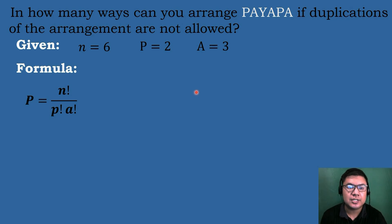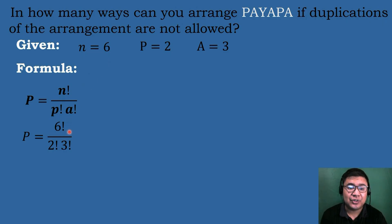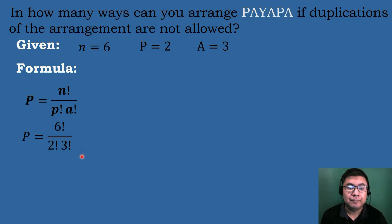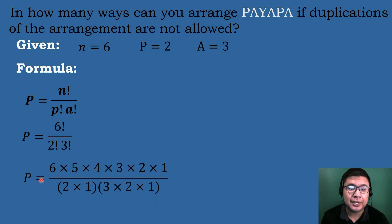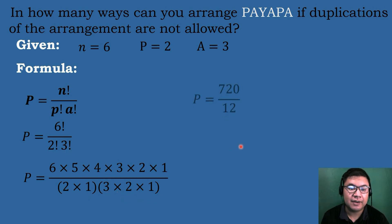Substituting the values: P equals 6 factorial over 2 factorial times 3 factorial. We simplify: 6 factorial is 6 times 5 times 4 times 3 times 2 times 1. The denominator is 2 factorial, which is 2 times 1, times 3 factorial, which is 3 times 2 times 1.